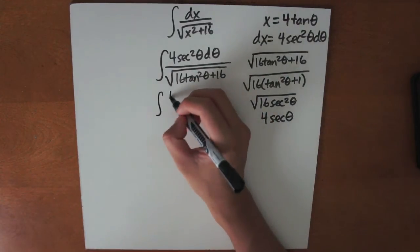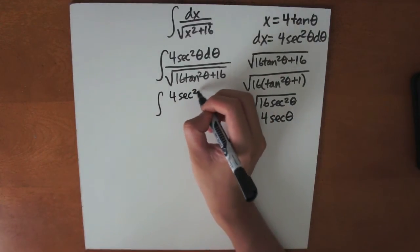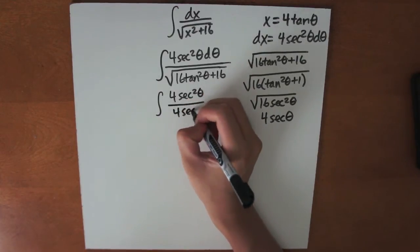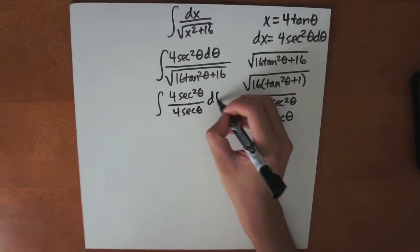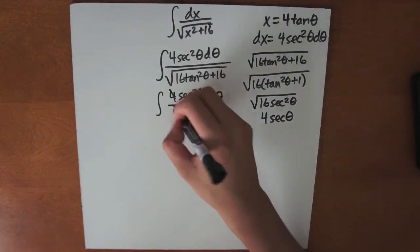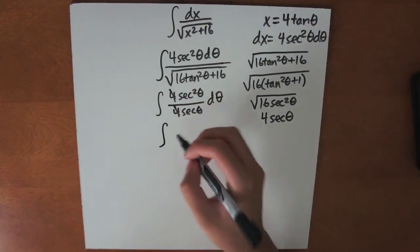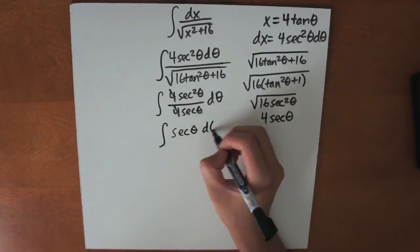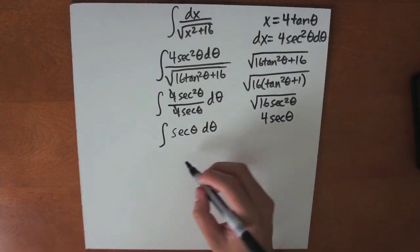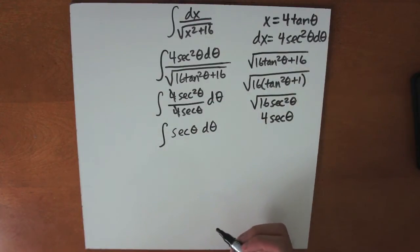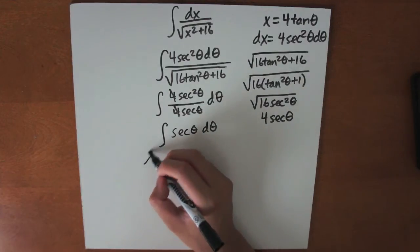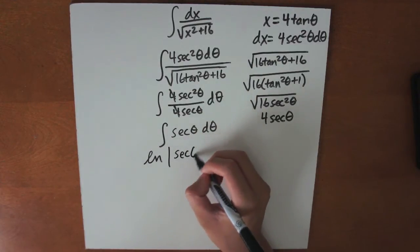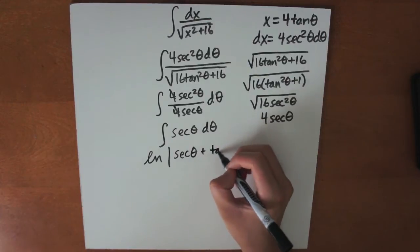Plugging back in, the integral becomes 4 secant squared theta over 4 secant theta d theta. This simplifies to the integral of just secant theta d theta. The integral of secant theta d theta is the natural logarithm of the absolute value of secant theta plus tangent theta.